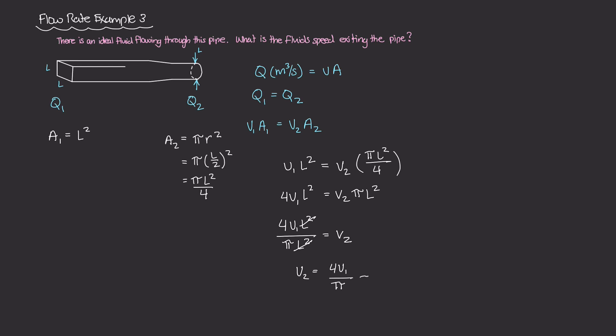And if we want to solve this out numerically, this is roughly equal to 1.2732 times V1. So there we go. The velocity at 2, the exiting velocity of this fluid is about 1.27 times the entering speed V1.